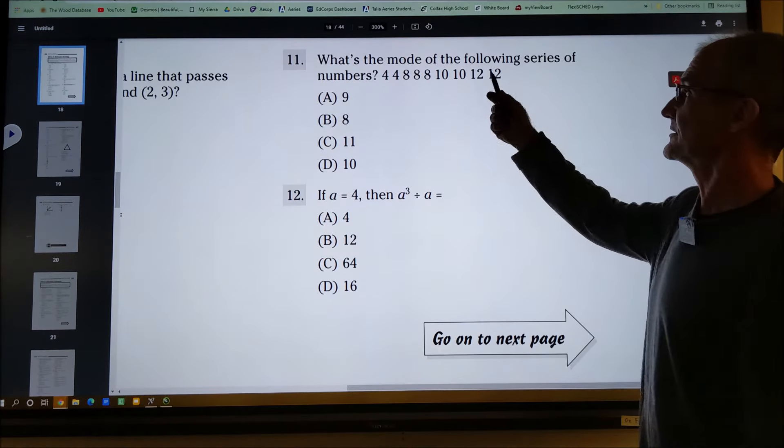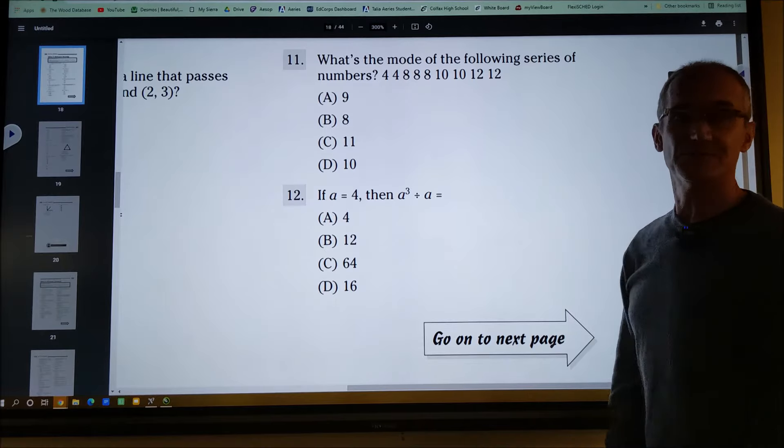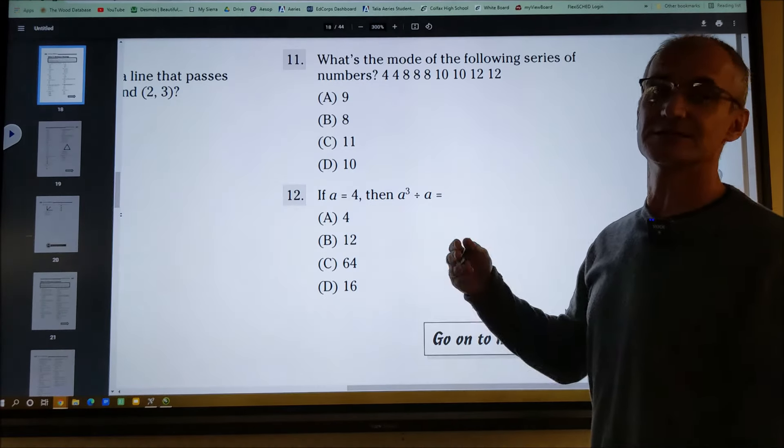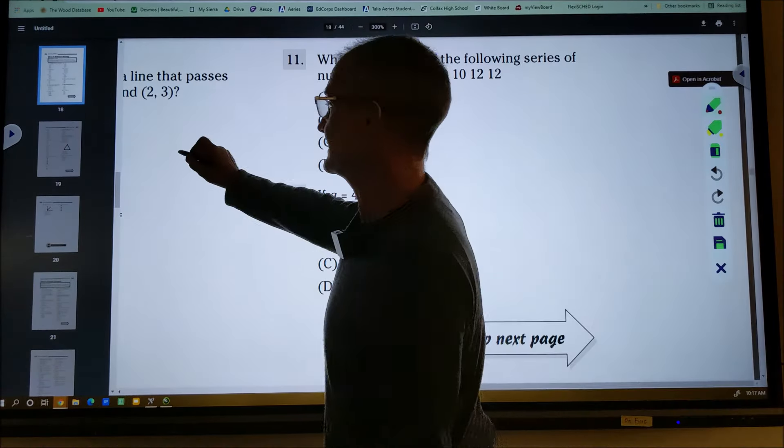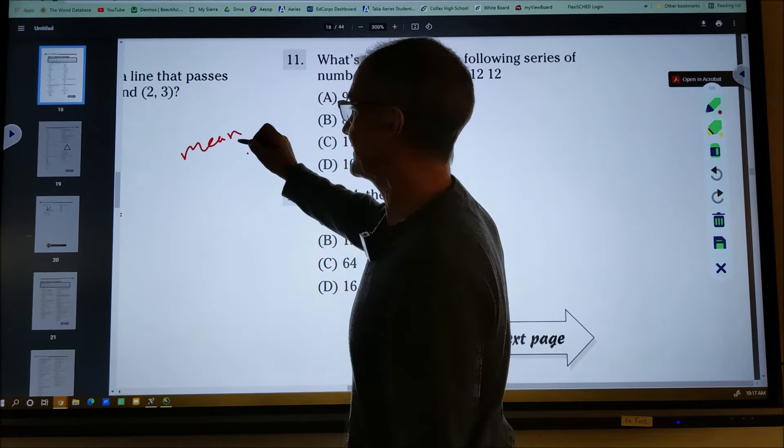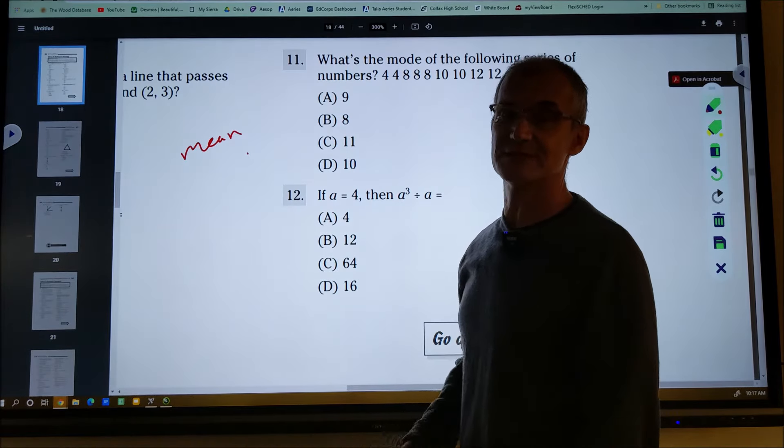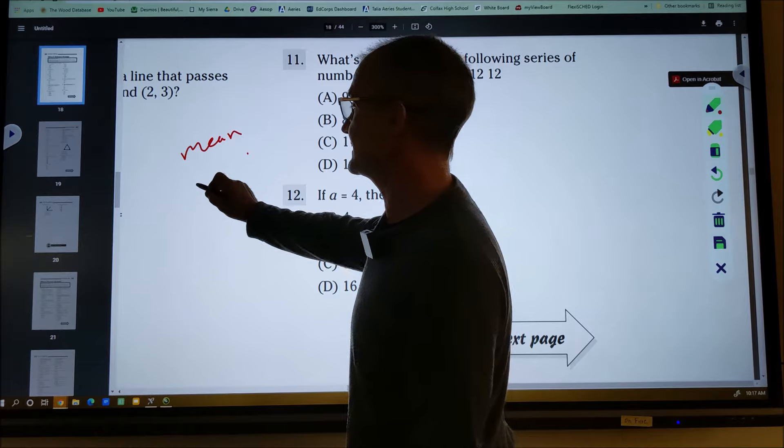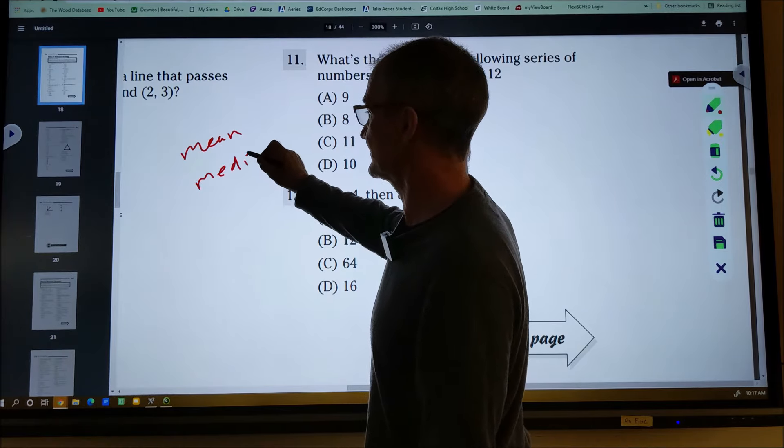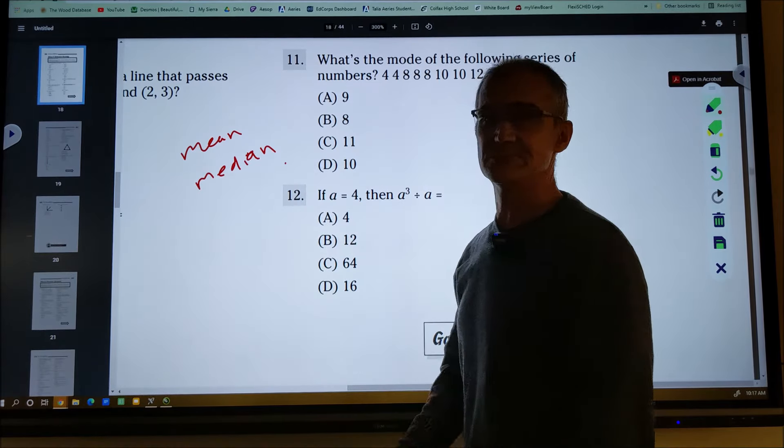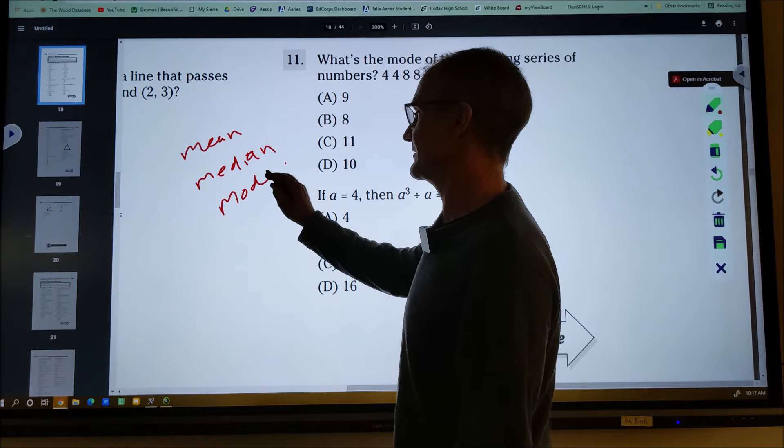Number 11, what's the mode of the following set of data? Again, that's a vocab question. There's mean, median, and mode. The mean is the average value. Add all the values up and divide by the number of values. The median, like the median on the freeway, is the middle value. And the mode is the most frequent value.